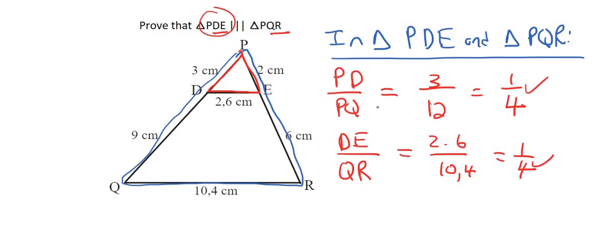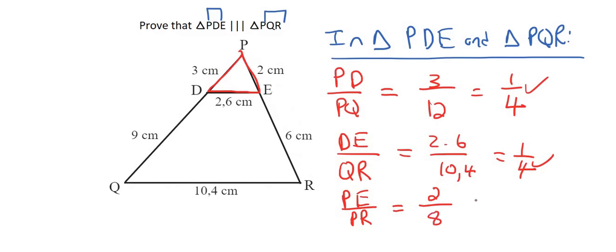Now we just need to look at the last two sides. And so that would be PE and PR. So I would say PE over PR. And let's see what that is. Well that's going to be 2 over, now remember PR is the 2 plus the 6. Let me just let you see that. There we go. 2 plus 6. And so that's going to be 8. And so that's going to be 1 over 4. So check this out guys. All three of the ratios are the same. And so that means they are similar.